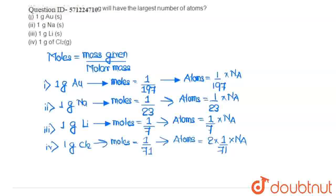If we see this calculation, then the lowest number of atoms will be in the case of gold, and the highest number of atoms